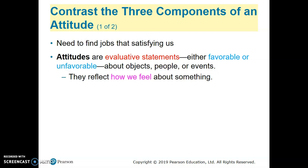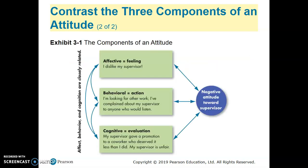Attitudes are evaluative statements. When we talk about attitude, we talk about whether it is favorable or unfavorable. Sometimes we have a favorable attitude towards something, sometimes we have an unfavorable attitude towards something. It's reflecting our feeling about something. The components of attitude consist of three types: affective, behavioral, and cognitive.